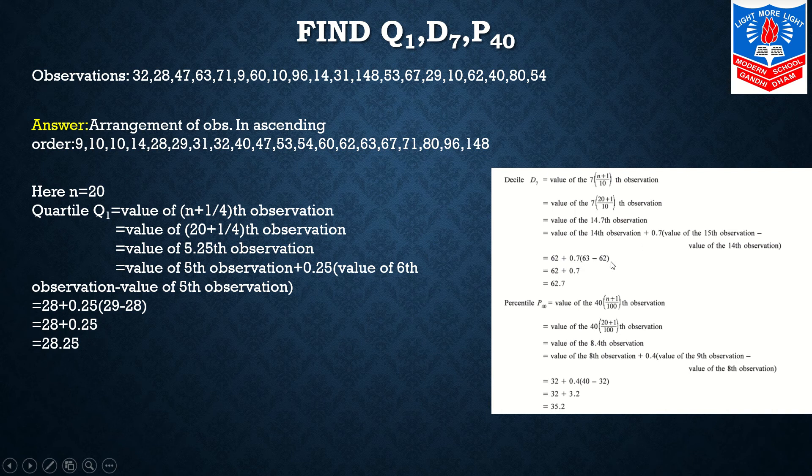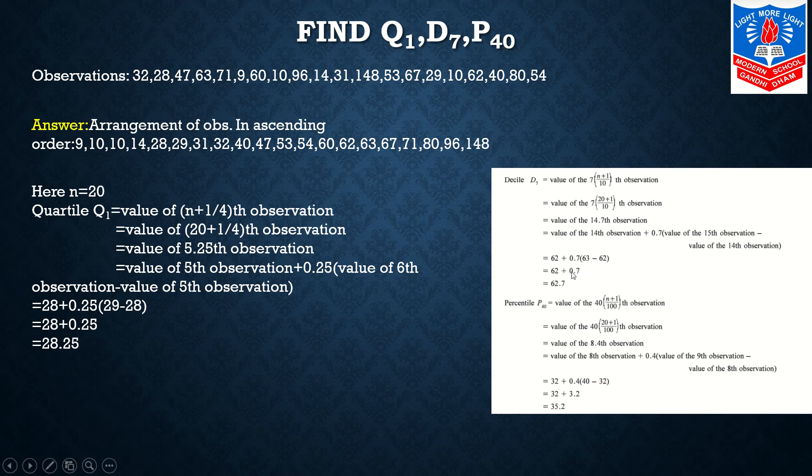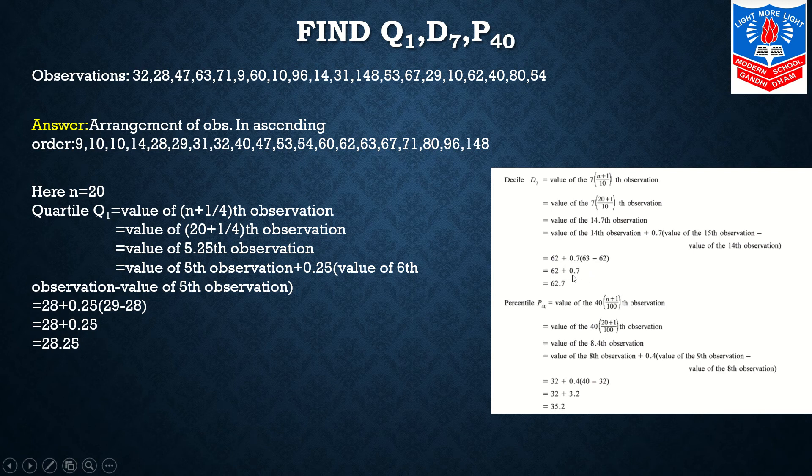14th observation if we see in our arranged data we will get 62 + 0.7(63 - 62). 63 minus 62 we get 1. Multiply by 0.7, so it is 62 + 0.7, you will get 62.7.